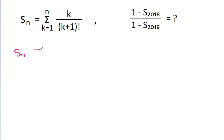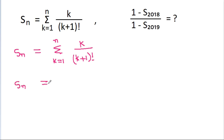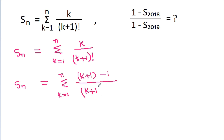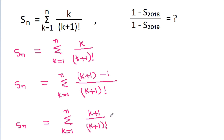We have Sn equal to the summation from k equals 1 to n of k divided by (k+1) factorial. We rewrite k as (k+1) minus 1, so Sn equals the summation of (k+1 minus 1) divided by (k+1) factorial.